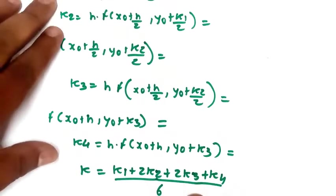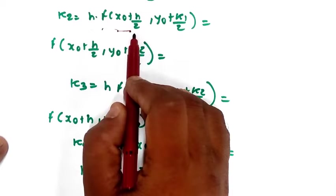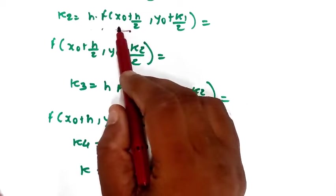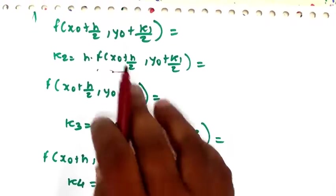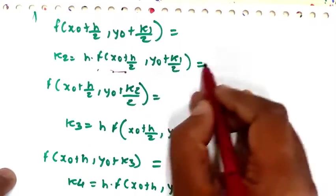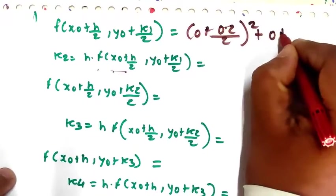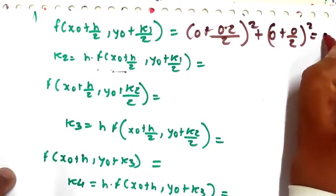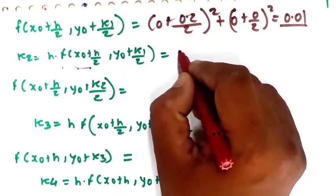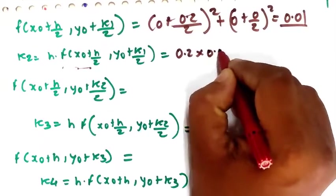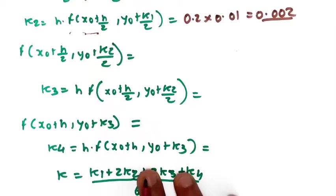Next, find k2. The formula for k2 is h × f(x0 + h/2, y0 + k1/2). Substituting: (0 + 0.2/2)² + (0 + 0/2)² = 0.1² = 0.01. Multiplying by h: k2 = 0.2 × 0.01 = 0.002.